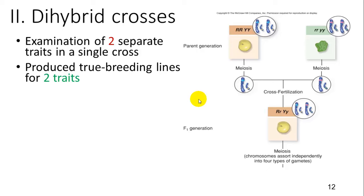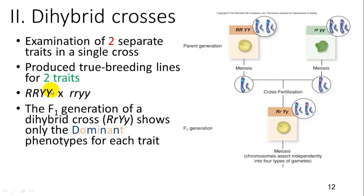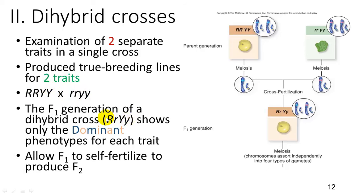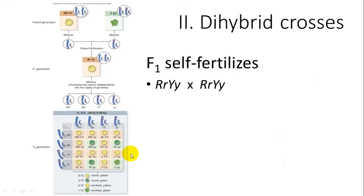That was a monohybrid cross. If you add another trait into the mix, you can make a dihybrid cross — the examination of two separate traits in a single cross, producing true breeding lines for two traits. Here we have the texture and color of the seed: round is big R, wrinkled is little r, yellow is big Y, and green is little y. You take two that are true breeding for each trait, cross them, and each one will be heterozygous for both traits.